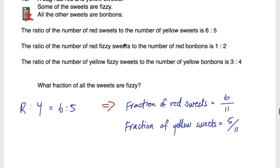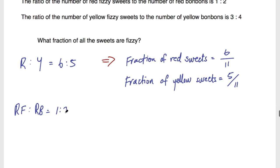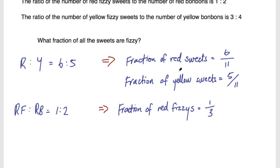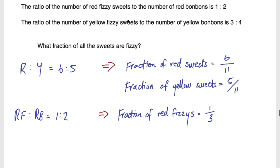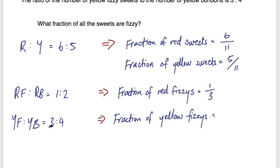They also tell us the ratio of red fizzies to red bonbons is 1 to 2. There are 3 parts in this ratio, so the fraction of red fizzies is 1 out of 3. And the ratio of yellow fizzy sweets to yellow bonbons is 3 to 4, so the fraction of yellow fizzies is 3 out of 7, since there are 7 parts in that ratio.